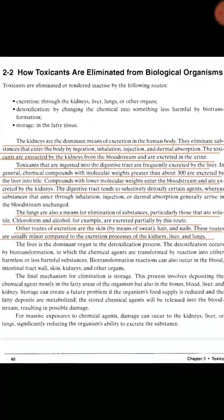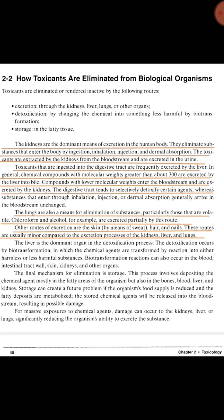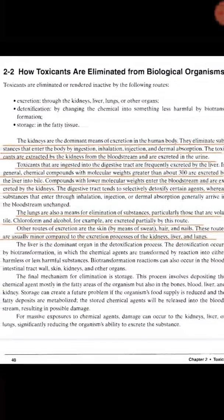The second process: toxicants that are ingested into the digestive tract are generally excreted by the liver. There are two types of excretion in the liver. First, when higher molecular weight compounds are present — generally around 300 — they are converted into bile and excreted by the liver. Lower molecular weight compounds are generally eliminated by the kidneys.